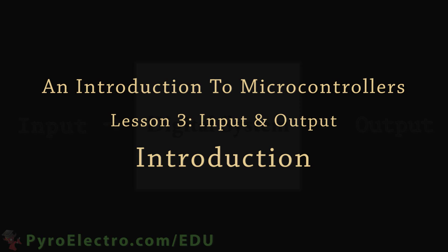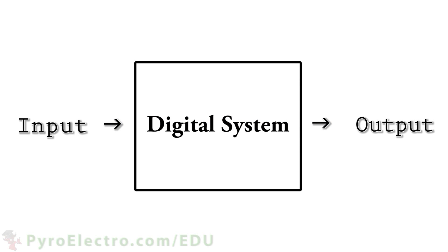Input and output are the two most important ideas when it comes to any type of system. Given some input, the system should react a certain way and yield a predefined output.